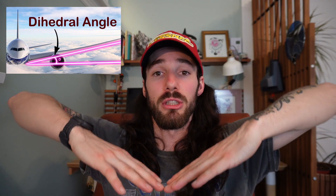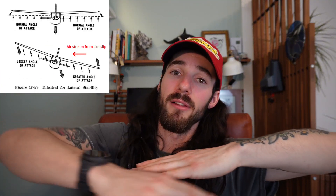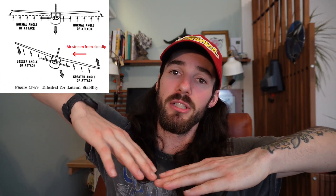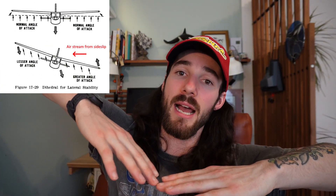Dihedral means that the wings are at a slight angle upwards from the fuselage. And if you were to roll left, the left wing would be reaching the relative airflow at a higher angle of attack than the wing that's up high, causing the airplane to naturally want to balance itself out. This is why most commercial airplanes are equipped with dihedral, so that the airplane has a natural way to correct and balance itself without the pilot's correction.